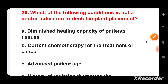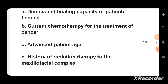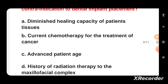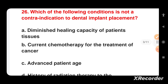Which of the following conditions is NOT a contraindication to dental implant placement? Options are: diminished healing capacity of patient tissue, current chemotherapy for cancer treatment, advanced patient age, or history of radiation therapy to the maxillofacial complex. Advanced patient age is not a contraindication to dental implant placement.